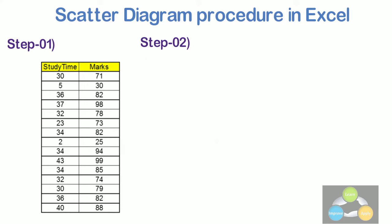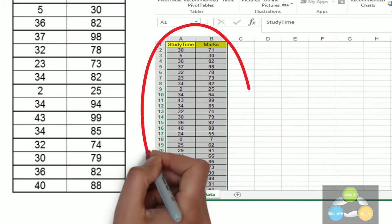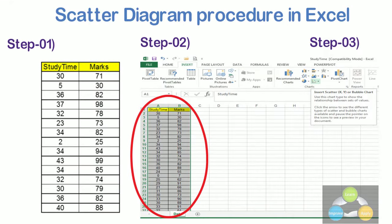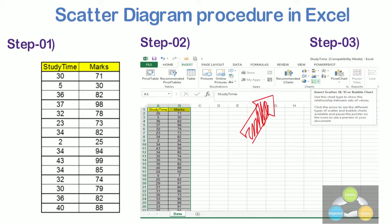Step 2. Select the data which you want to plot in the scatter chart. Step 3. On the insert tab in the charts group, click scatter.